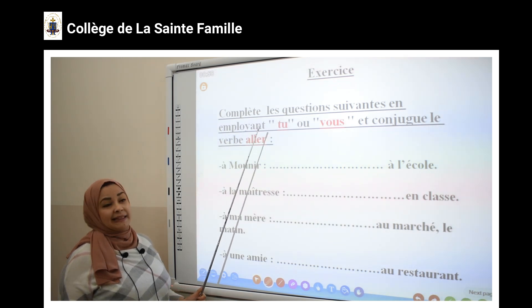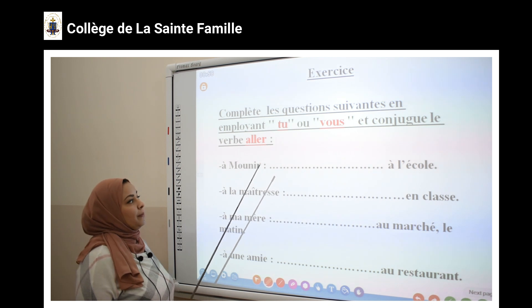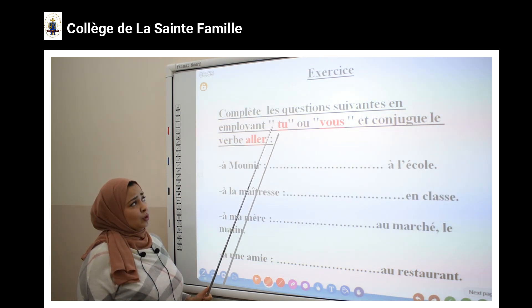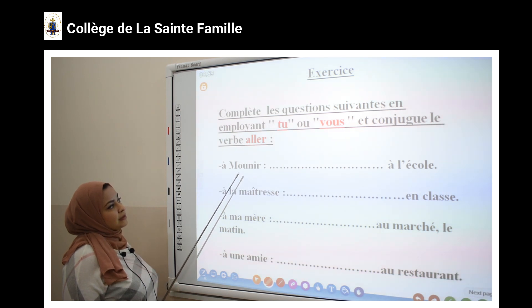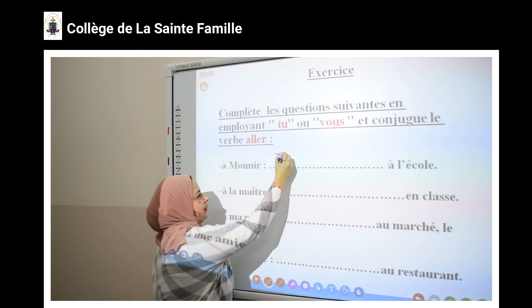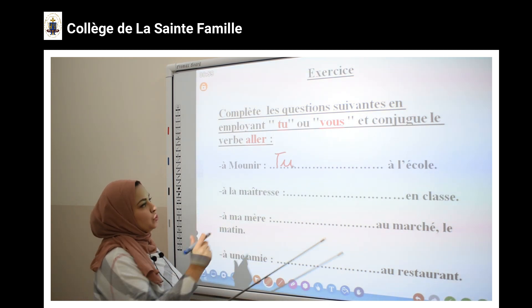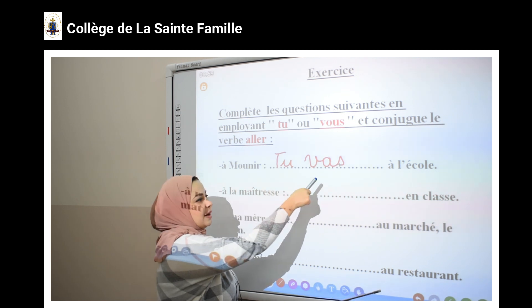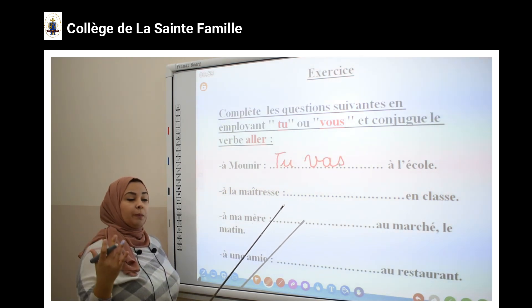Maintenant, on va faire un petit exercice. Regardez. Complète les questions suivantes en employant « tu » ou « vous » et conjugue le verbe « aller ». Je vois ici avec qui je parle et je vais mettre le pronom convenable. Ensuite, je conjugue le verbe « aller ». La première phrase : je parle à mon ami — c'est-à-dire une seule personne — j'utilise le pronom « tu ».